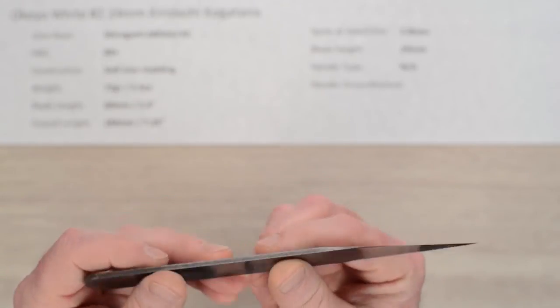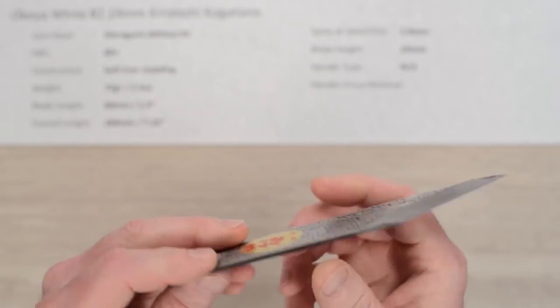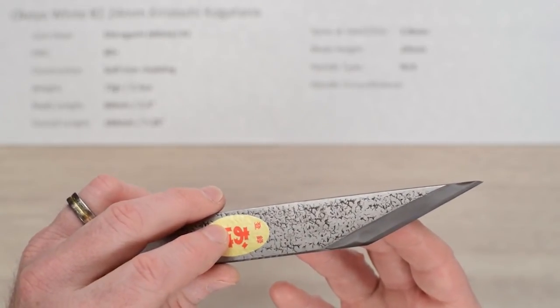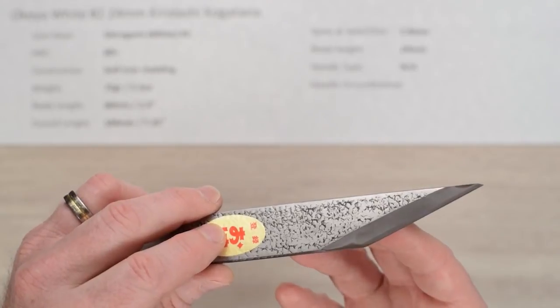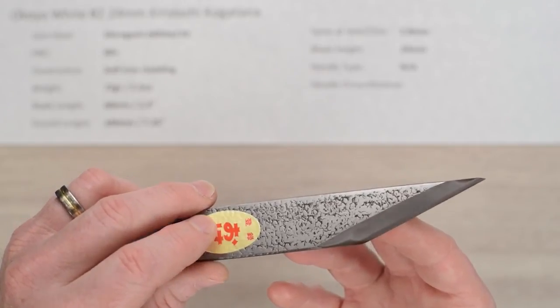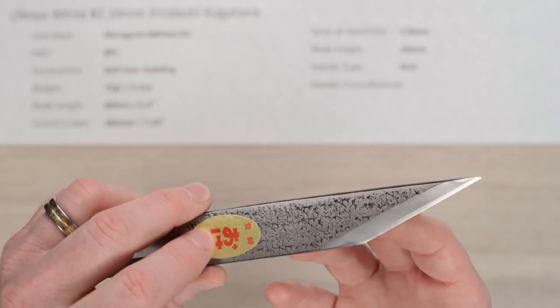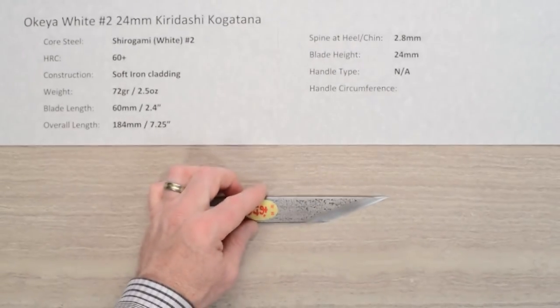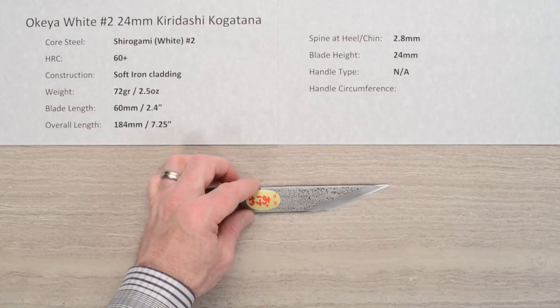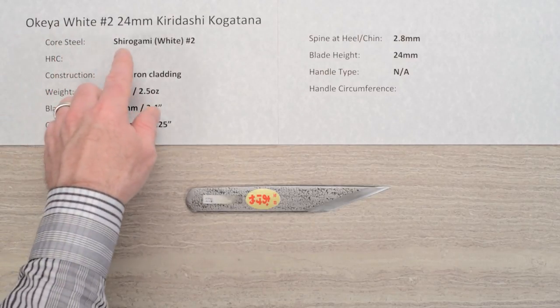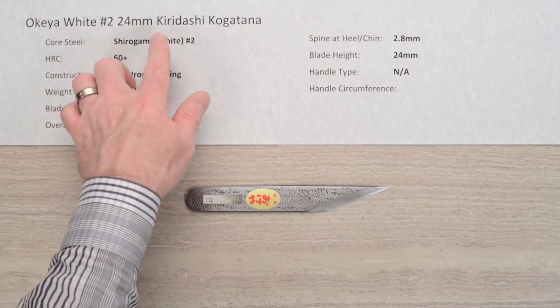As I said, I think they're an excellent tool to learn some of the ins and outs of single bevel sharpening before you pony up for a big dollar single bevel style knife that might be a little more difficult to sharpen. If you mess one of these up, you're not going to be hurting as much as a much more expensive traditional single bevel style blade. So I think this is a great tool for that, nicely made, great steel, very inexpensive, and a great learning tool. So there we have a utility knife, the Okea Shirogami or white number two 24 millimeter Kiridashi Kogatana.